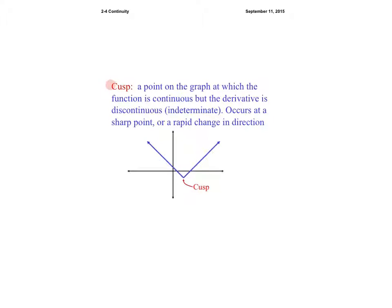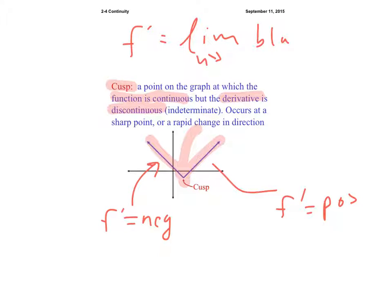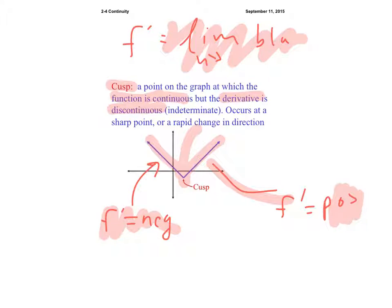A cusp — a sharp corner — is important for later. At a cusp, the limit exists on both sides and the point agrees with the limit, meaning the function is continuous. However, it will not be differentiable; the derivative does not exist. On the left the slope is negative and on the right the slope is positive, so the derivative is discontinuous even though the function is continuous.